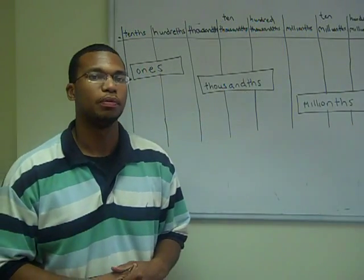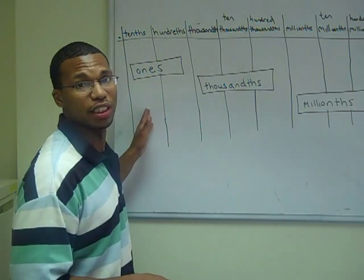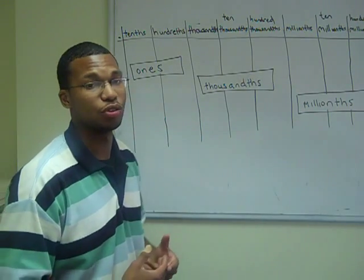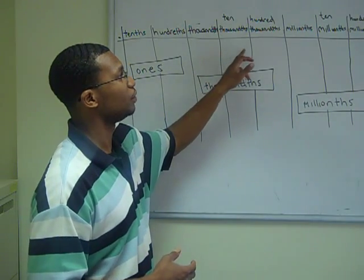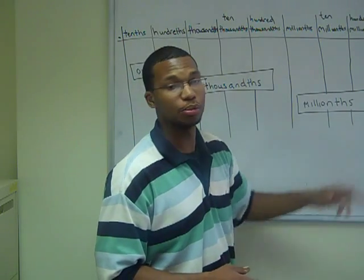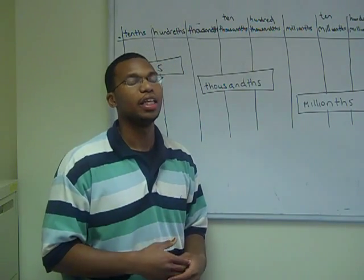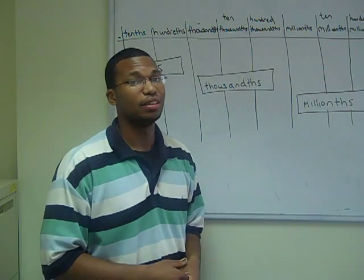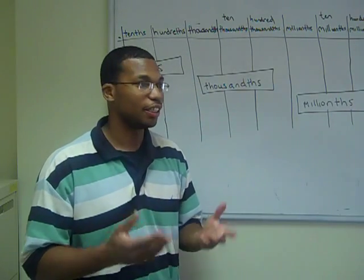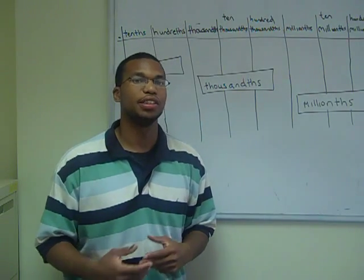On the right of the decimal point, it is also grouped in threes. The only thing is that on the right, it starts with tenths. So this is your ones group, which is the tenths and the hundredths. In your thousands group, you have thousandths, 10 thousandths, 100 thousandths. And in your millions group, you have the millionths, 10 millionths, 100 millionths, and then it goes on to the billionths. Notice the difference between the left and the right side: the right side has a "th" at the end, which signifies that the right side is the smaller amount and the left side is the larger amount.